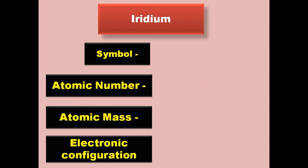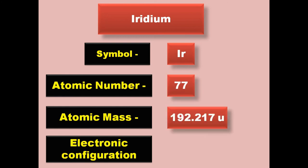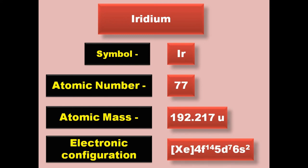Iridium has symbol Ir, atomic number 77, atomic mass 192.217, electronic configuration [Xe] 4f14 5d7 6s2. Iridium is a transition metal and exists in solid form at room temperature.